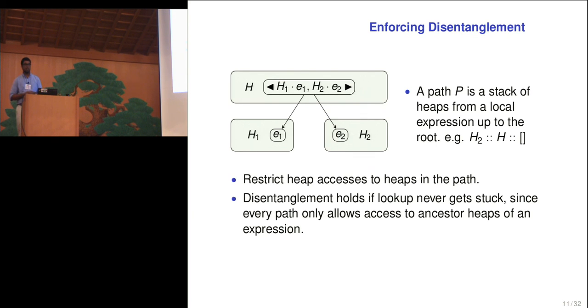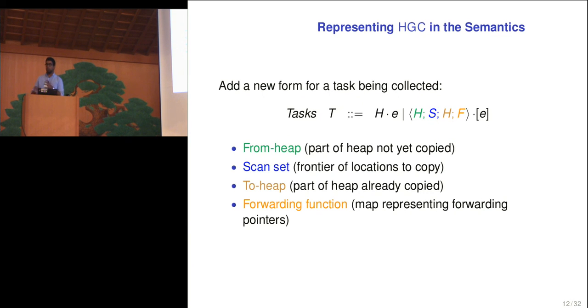Now let's talk about those paths again. We have paths, and we construct them so that they are a stack of heaps of the local expression from the local expression all the way up to the root. So in this diagram, for example, the path that's associated with the expression E2 and the task of that expression is both H2 and H. It does not include H1. Now if we set up paths like this, and we've set up the semantics so that heap accesses can only go up the paths, then it naturally follows that if the heap access or lookup function never fails, never gets stuck, then disentanglement must hold, because lookup can only work on those heaps in a path, which is the disentangled list.